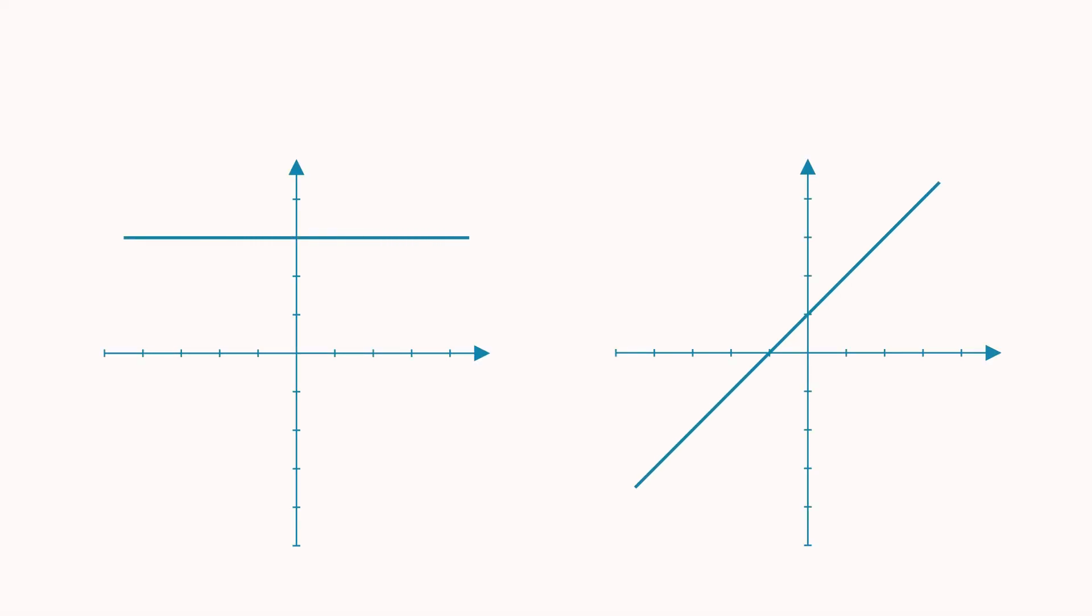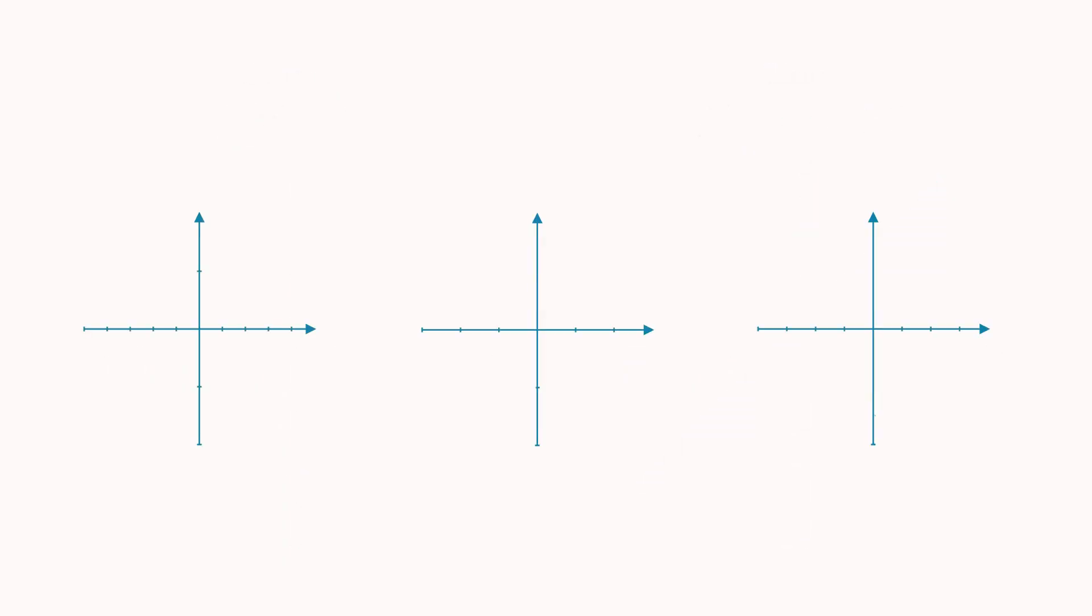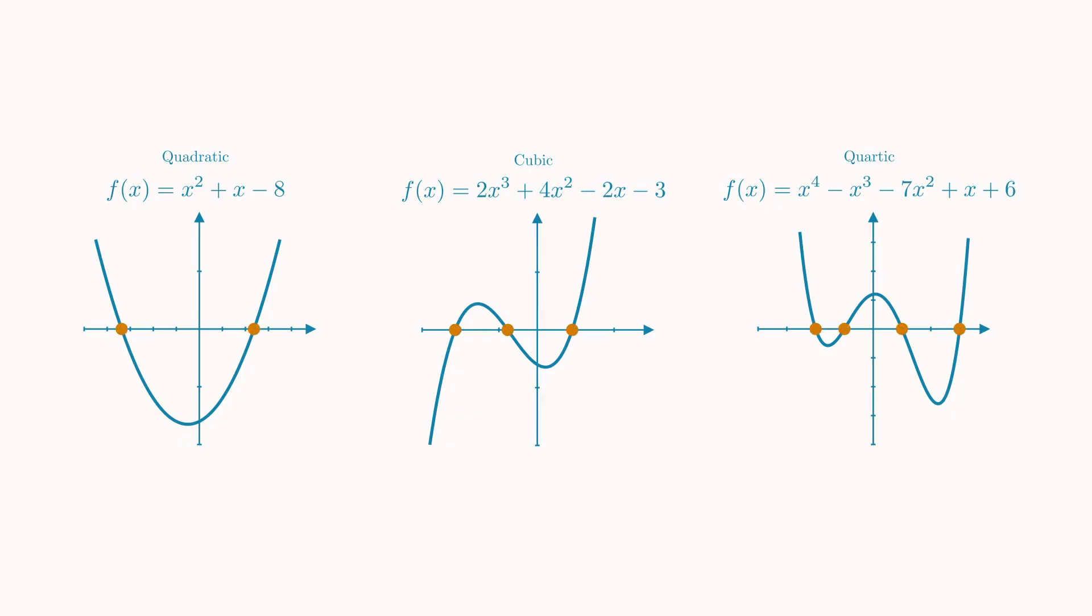Polynomials are everywhere in maths. They're simple to write, just powers of x with some coefficients. And usually when we look at polynomials, we try to find the roots. The x values where the polynomial equals zero.